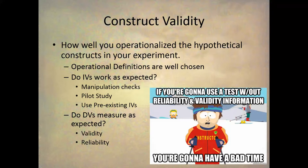Going back to the same example from the example experiment in the first two research methods videos: mood was the independent variable construct, and that was operationally defined by getting positive or negative feedback about how well you did on an important exam. It makes sense that if you receive negative information about how well you did on an important exam, that should put you in a bad mood, and if you receive positive information, that should put you in a good mood.